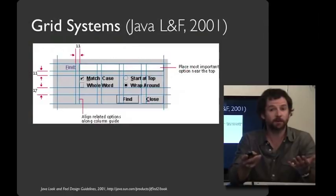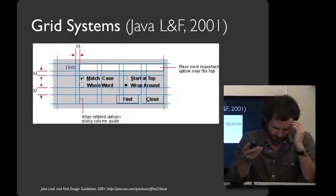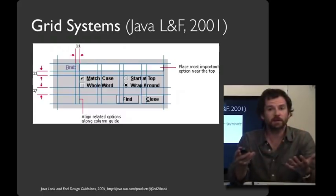Here's an example of a grid. This comes from the Java look and feel design guidelines, and it's annotated by Sun on this web resource. This is a find dialog box, and what you can see is that all of the elements in the dialog box have been arranged using a grid. And what we mean by a grid is that there's a set of invisible lines that all of the elements on the screen snap to.